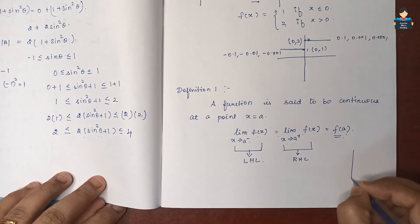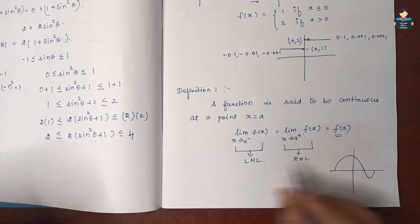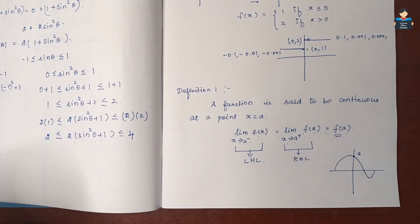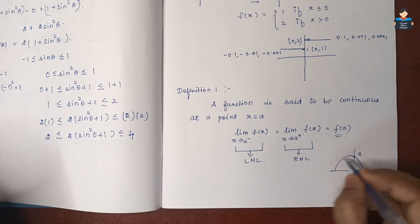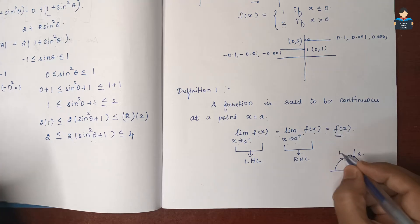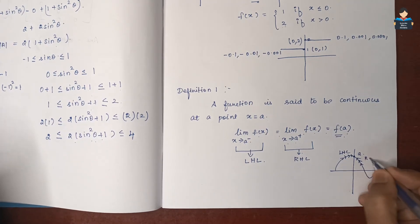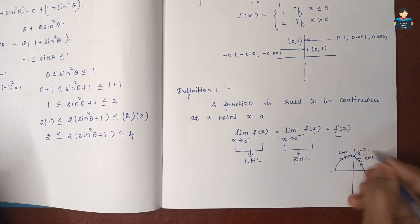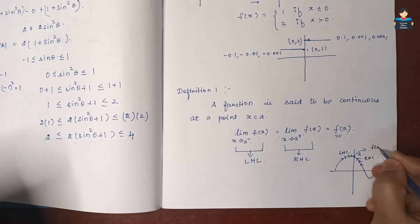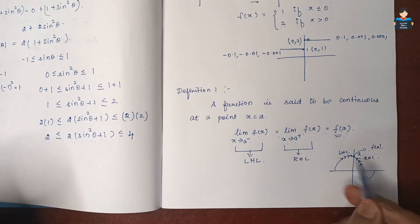Looking at the graph: this is the left-hand side of point a, that is the LHL; this is the right-hand limit, RHL; and f(a) is the functional value at the point. Since all three values are the same, the function is continuous.